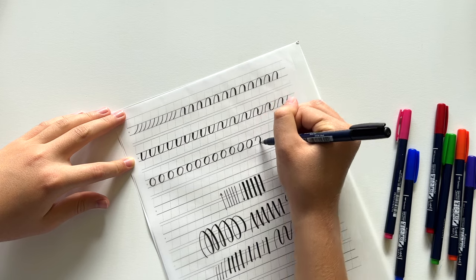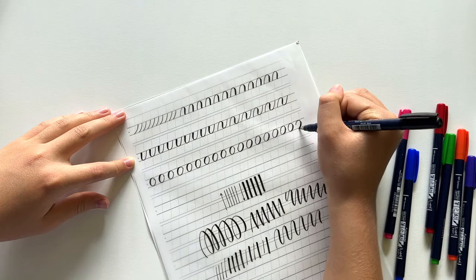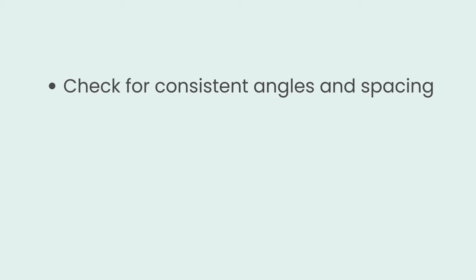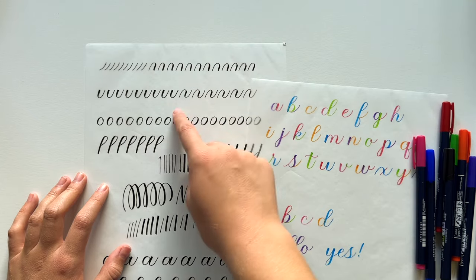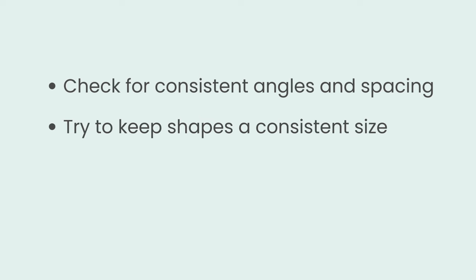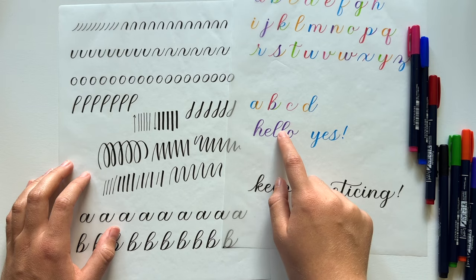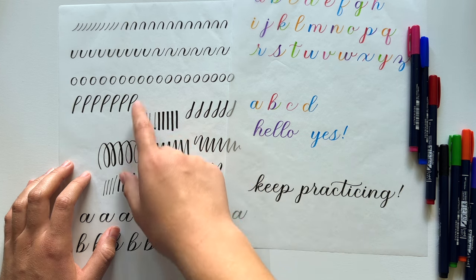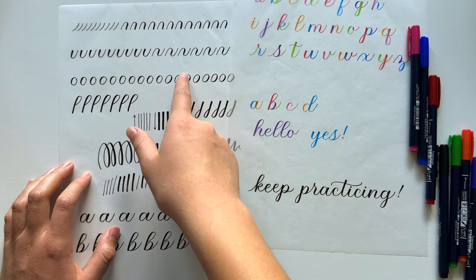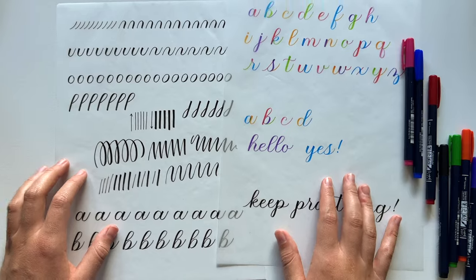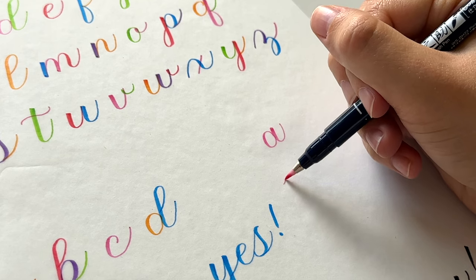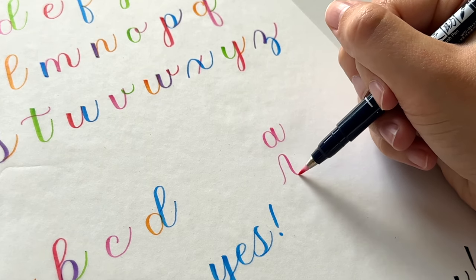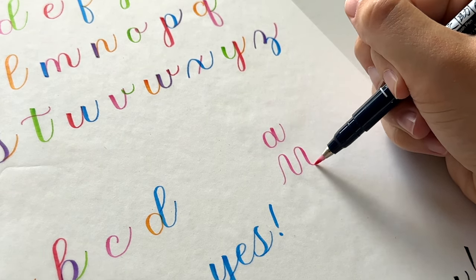So some things to work on as you practice your calligraphy are checking for consistent angles and spacing. Using some sort of guidelines is super important for this. Also trying to keep the shapes a consistent size. So breaking everything down to those individual strokes and working on keeping those consistent. Again, guidelines are a must. And you also want to practice smooth transitions, which are those areas where you transition from heavy pressure to light pressure or vice versa.